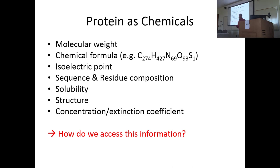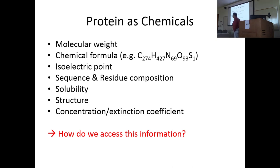Proteins also have a sequence and residue composition, solubility, structure, and concentration and extinction coefficient. If you're interested in any kind of biophysical or biochemical study — say, enzyme kinetics or protein function — concentration is an extremely important property. I often talk with biologists who send me a protein sequence and tell me the test tube contains a protein, but they don't know the concentration. They say 'I just know it has the activity I want.' Well, that's a starting point, but more of that chemical means more activity.